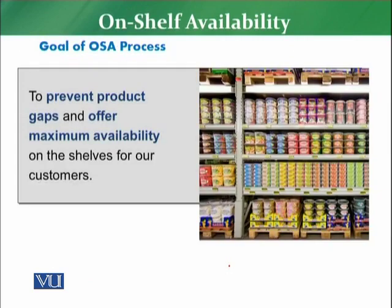What are the goals of the on-shelf availability process? It is key for the customer that whatever he has planned on his list must be available on the shelf. The key goal of OSA — on-shelf availability — is to prevent product gaps and offer maximum availability. You need to avoid the shelf gap, the product availability gap, and ensure that maximum availability of products is on the shelf for the customer.